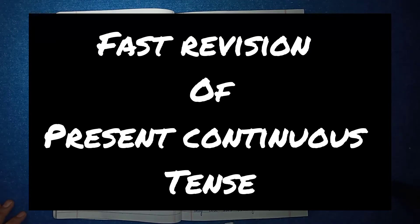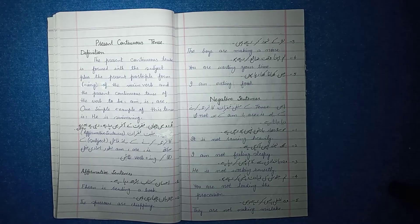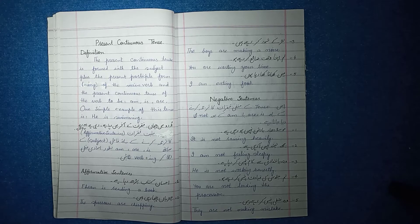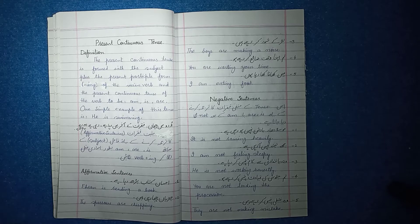Come to the next topic: present continuous tense, which is also known as present progressive tense. The present continuous tense is formed with the subject plus the present participle form — the ING form of the main verb — and the present continuous tense of the verb 'to be': am, is, are.